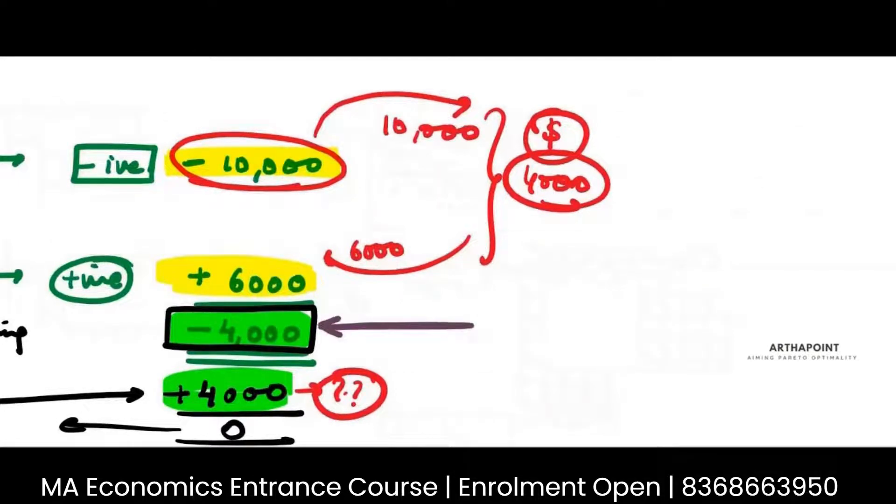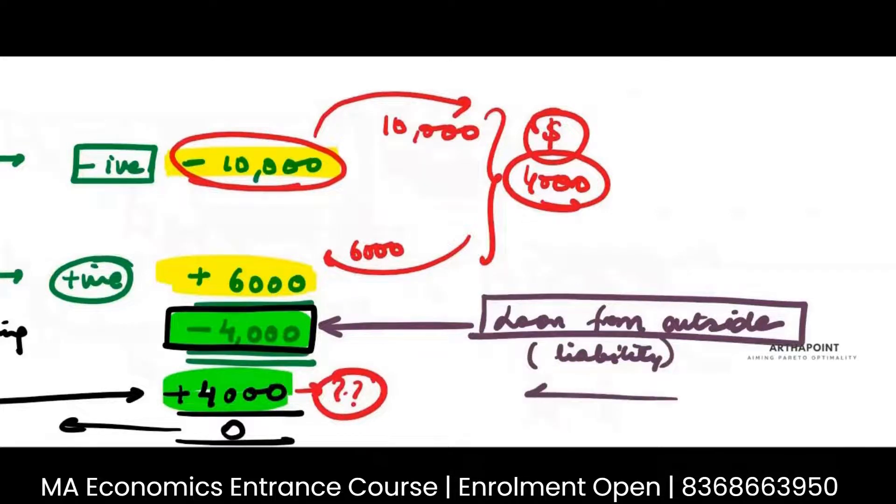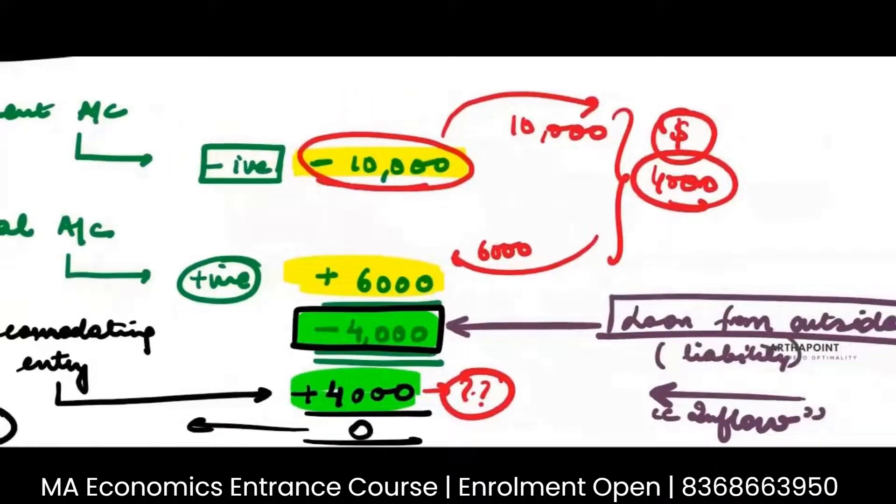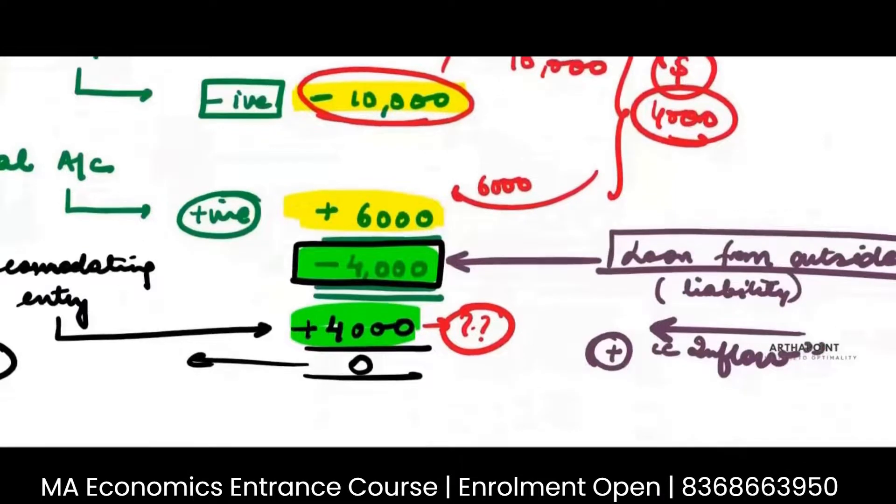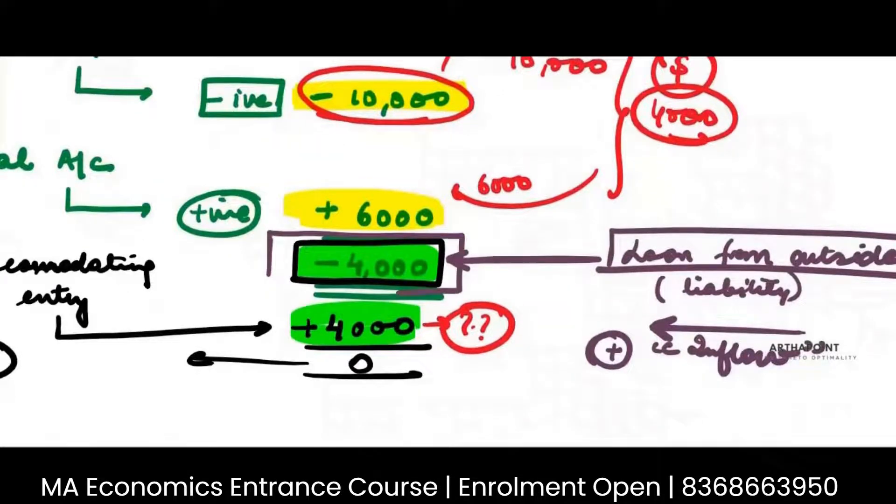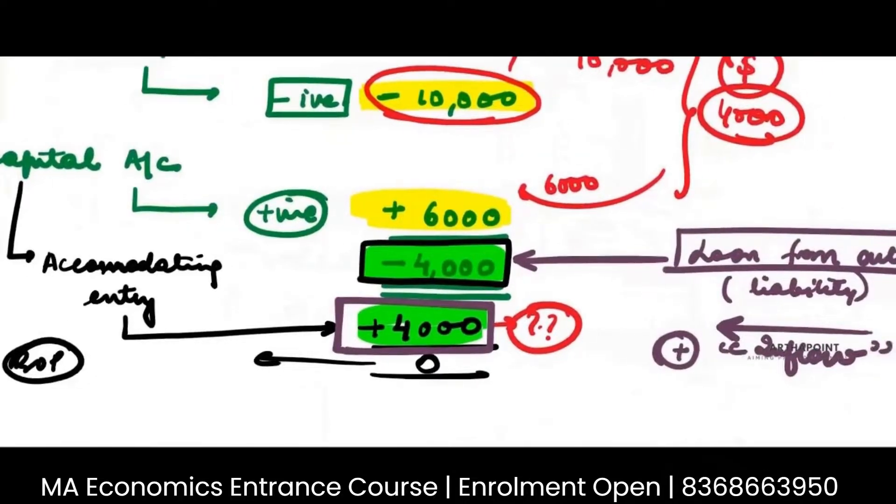How do you get this? One way to fund this would be to take a loan from outside, from foreign. When you take a loan, although this is a liability, we know that. But what will happen when you take a loan? Money will come in the economy. Money will inflow. And whenever money inflows, how do you show it in the current capital account? Whenever money inflows, it's a positive transaction because money is inflowing. So ideally, this 4,000 plus for this negative 4,000, this 4,000 plus that we are making, this accommodating statement that we are making,